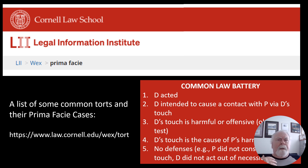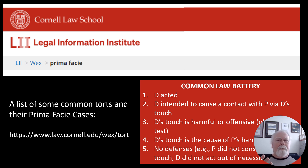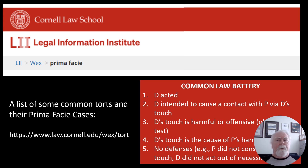On causation, consider a chain of events: the defendant throws a ball, it breaks a window, and the glass hits the plaintiff in the eye. Is that battery? The defendant didn't directly hit them, but the glass caused contact — so we'd have to explore whether this qualifies as battery. The fifth element is that there are no defenses. For instance, consent is always a good defense: punching someone is normally battery, but in an MMA match or sparring session, the plaintiff consented to be struck.